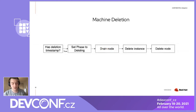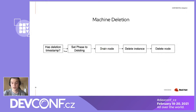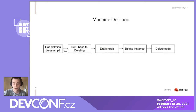The last part of the machine lifecycle is deletion. The controller sets the phase to deleting, indicating that the deletion process was started. Then it performs node draining — a process that blocks a node from scheduling new pods and terminates all running pods. And if node draining is combined with pod disruption budget, which is an API for controlling graceful shutdown of your workloads, then the impact should be minimal. After draining the node, the controller deletes the instance from the cloud, and finally deletes the node object from the API.